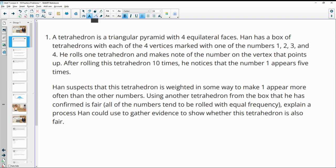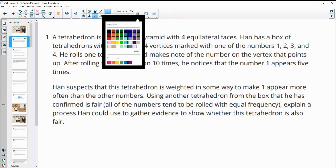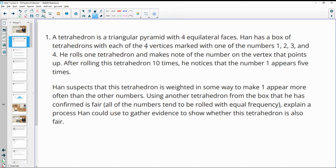Number one says a tetrahedron is a triangular pyramid with equilateral faces. Han has a box of tetrahedrons, each with four vertices, marked with the numbers 1, 2, 3, and 4. He rolls the tetrahedron and makes note of the number on the vertex that points up.